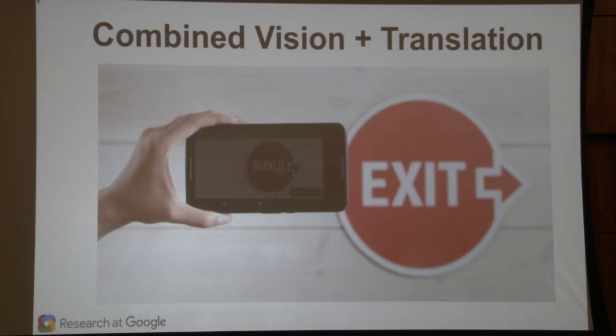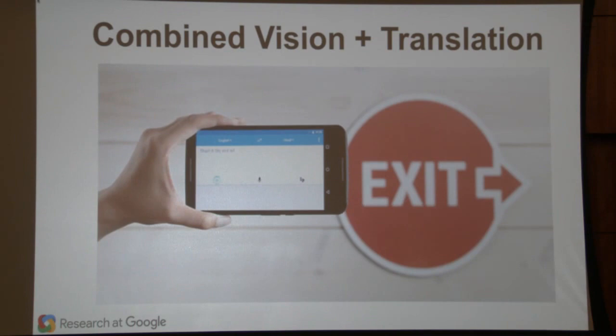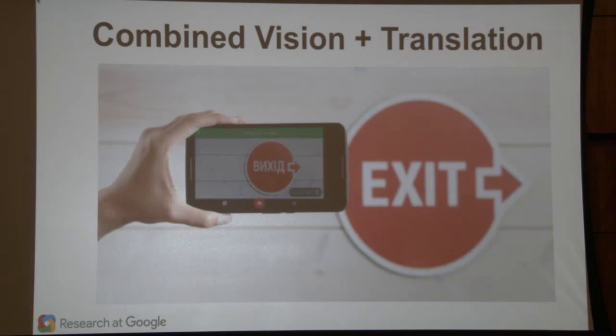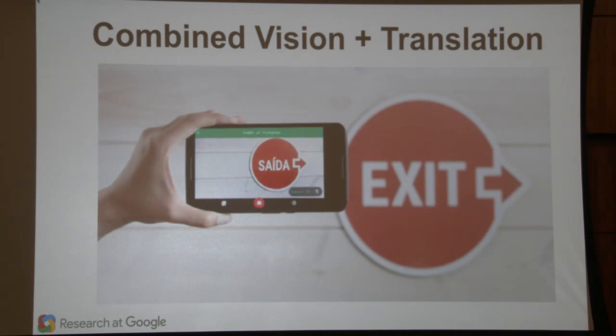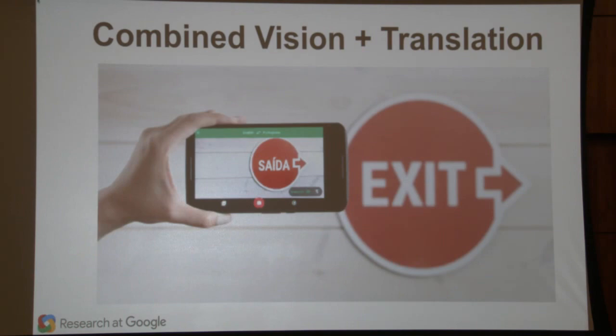Another product influenced by neural nets is the Android app for Google Translate. You can hover in camera mode over text, and it runs an OCR computer vision model on the pixels from the camera. When it detects text, it translates it into whatever language it's configured to translate to — particularly handy when traveling in countries with different character sets.